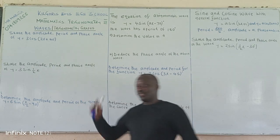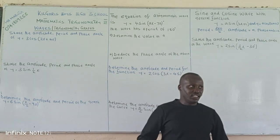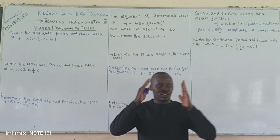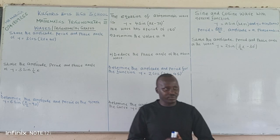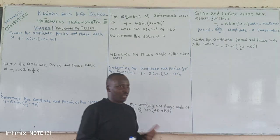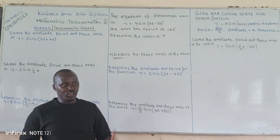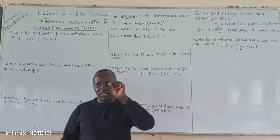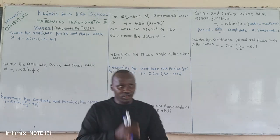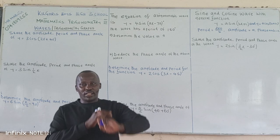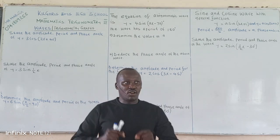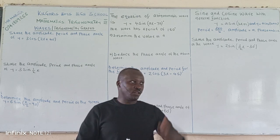Today we are looking at a case of TCC Vision Mathematics — that is trigonometric waves and trigonometric graphs. In waves and trigonometric graphs, you need to understand that we are interested in three things: the period of the wave, the amplitude of the wave, and the first angle or the shift angle of the wave.